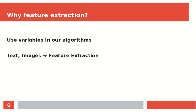For example, we could have text or image data, and then we do a step called feature extraction. In the case of text, you could have word frequency as a feature. So if you have 100 documents, we could compare them based on the words, and given a new document we can predict what kind of document it is, just based on the word frequency.